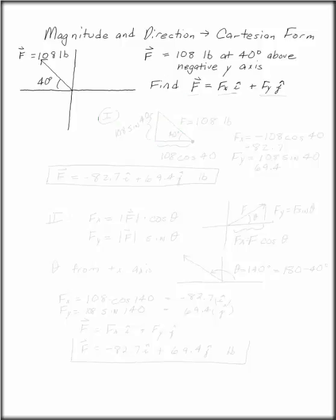Magnitude and direction to Cartesian form. F is 108 pounds at 40 degrees above the negative y-axis. Find F in Cartesian form.